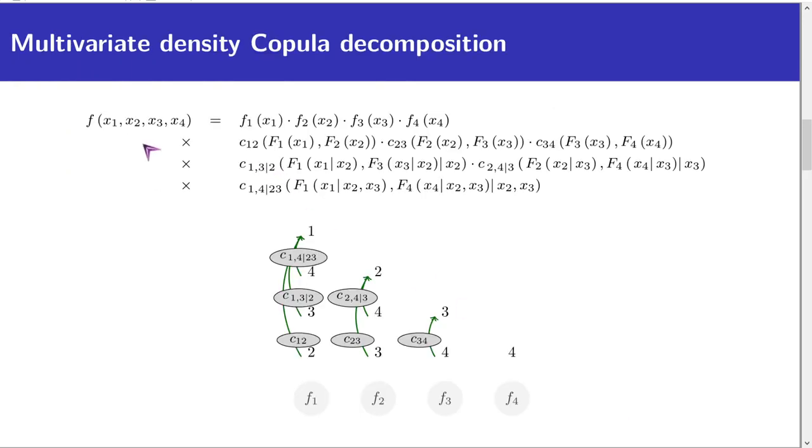Here is an example of the decomposition I mentioned earlier for four random variables. These, or any other of the many possible decompositions, provide a mechanical way to compute the density or likelihood as long as the individual copula functions, denoted by C, and the marginal densities, F, are specified.